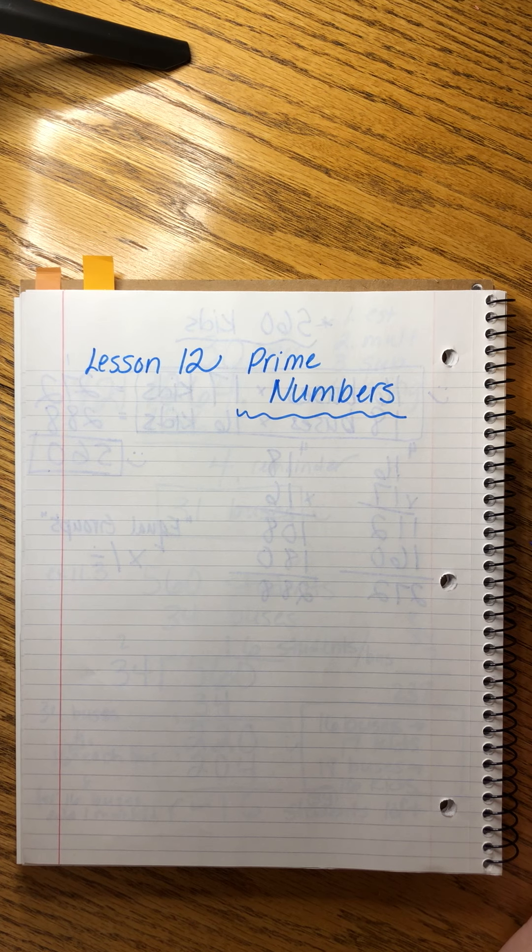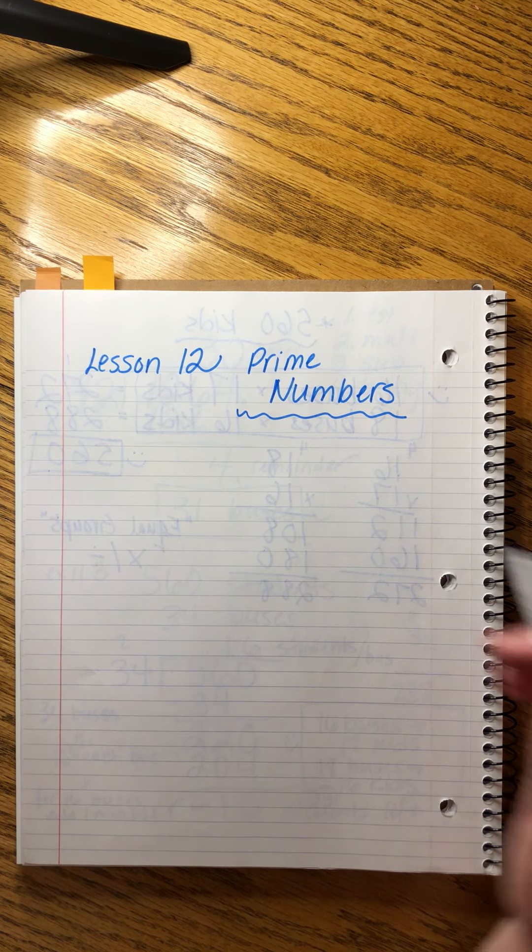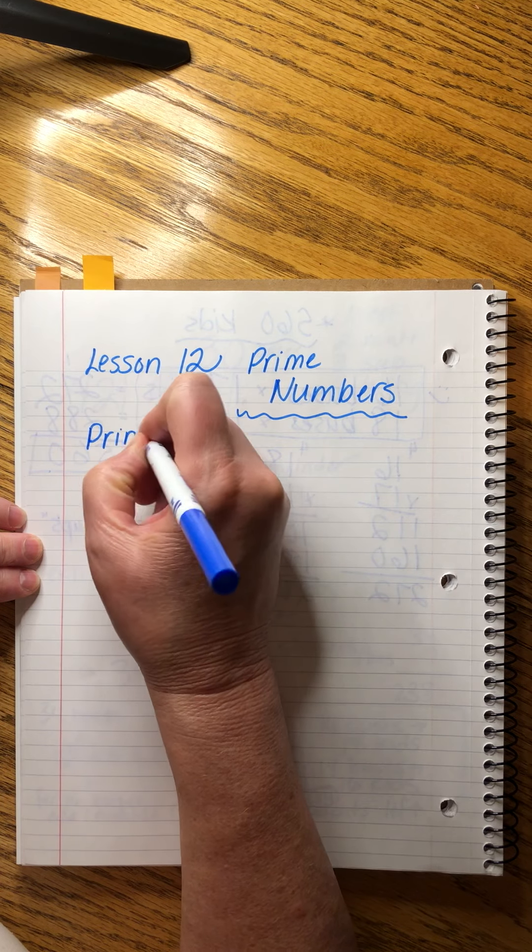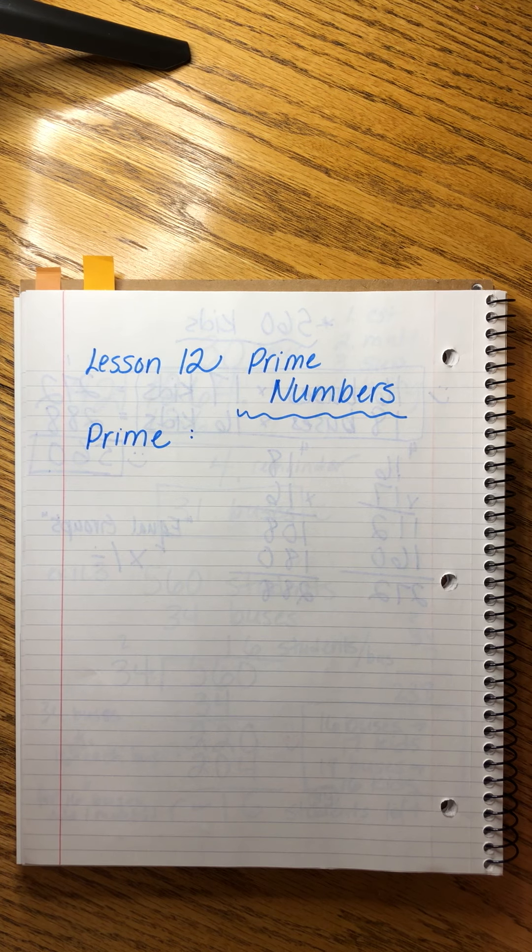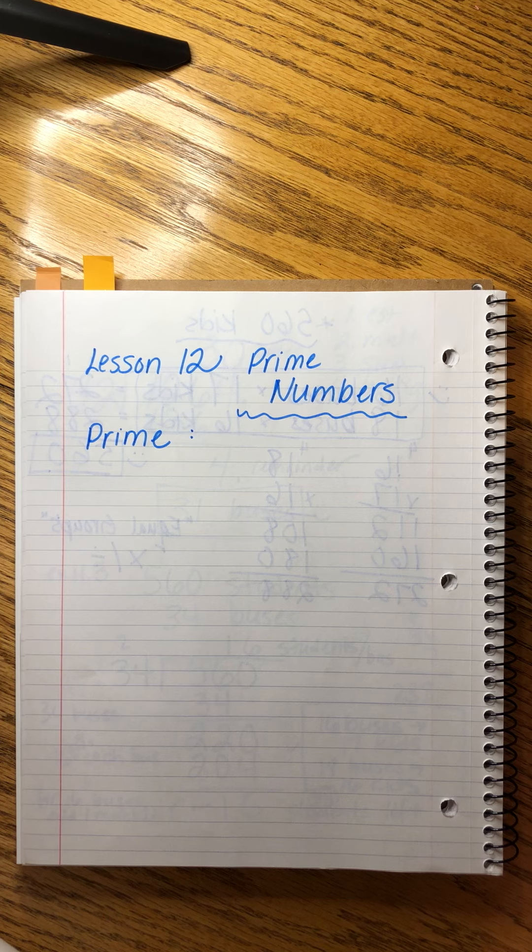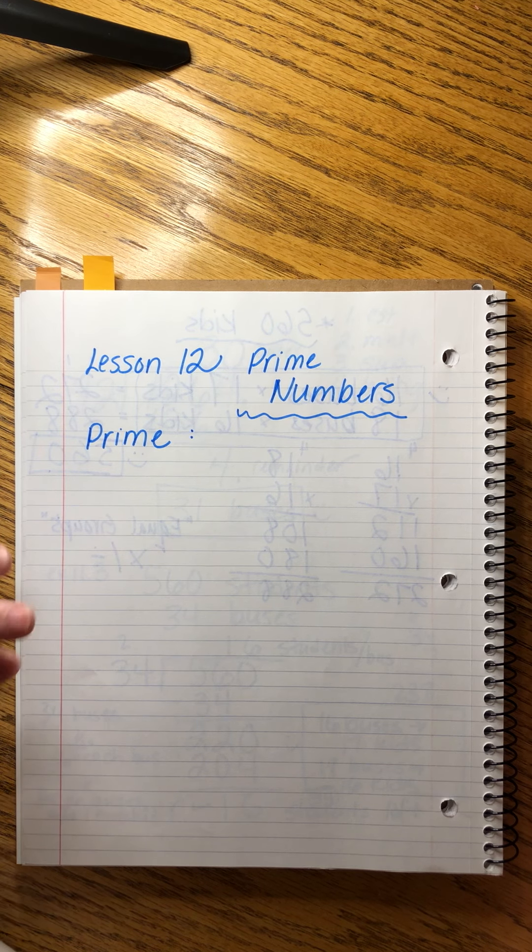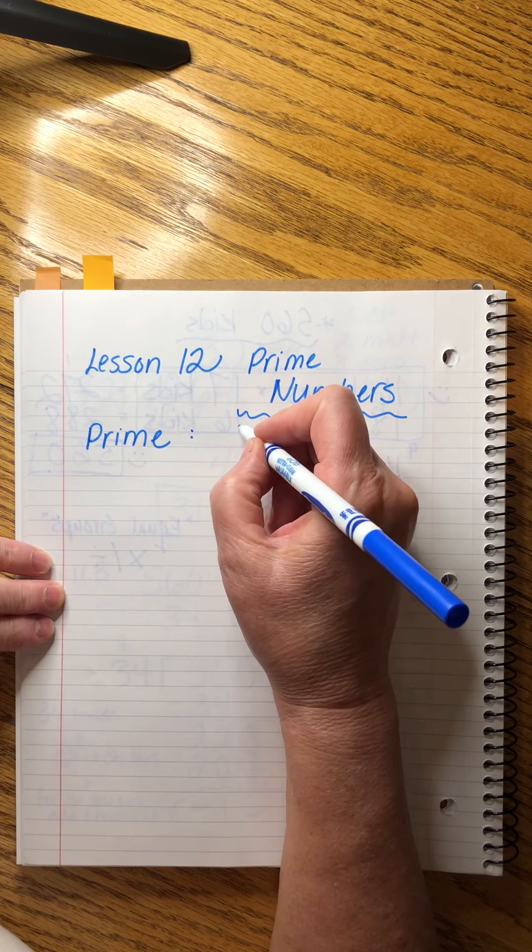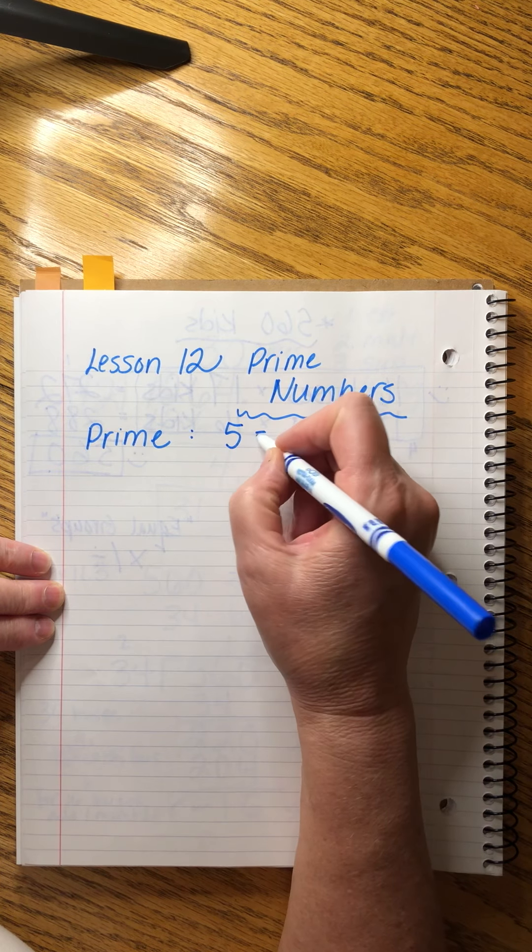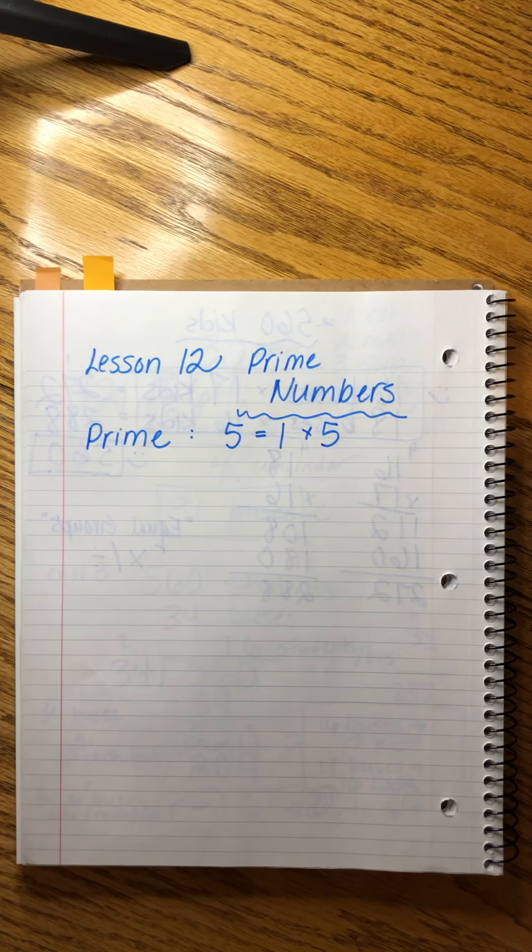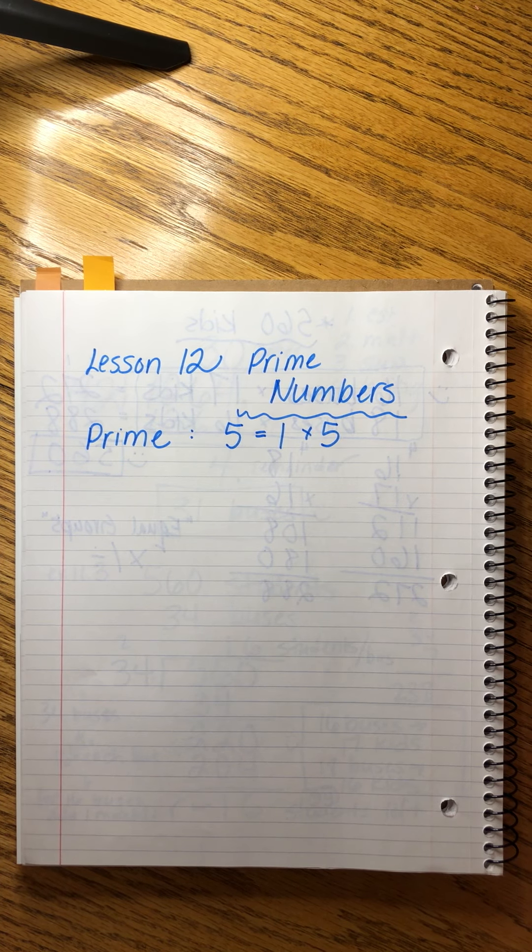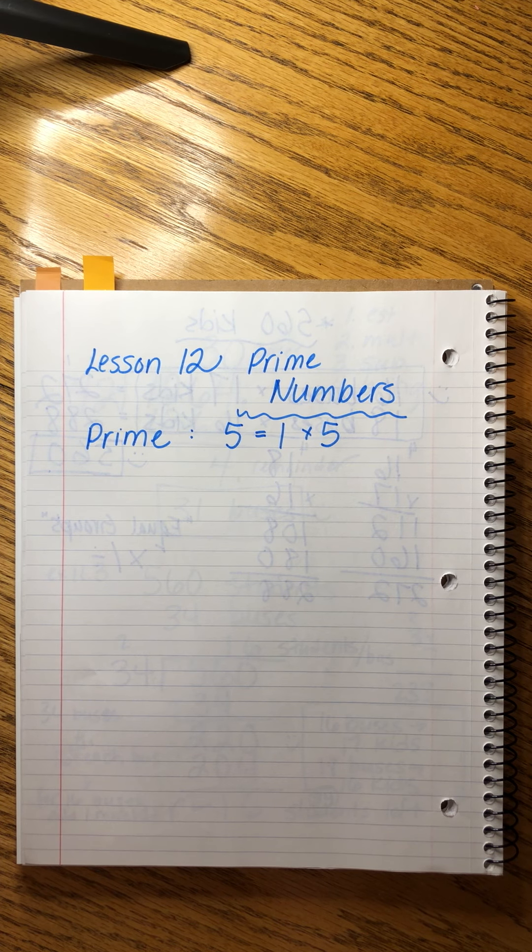Definitely worth the effort we're going to put into learning them. Remember that a number is prime if the only way that number can be a product of a multiplication problem is one times that number. A great example is five—the only two numbers that multiply to get five are one times five. That makes it a prime number, meaning it can't be broken down any farther.